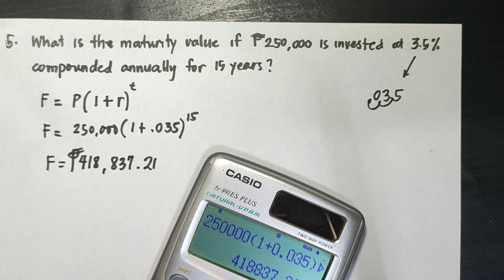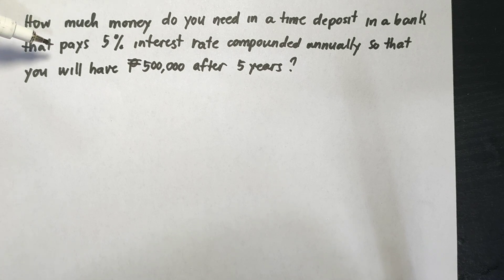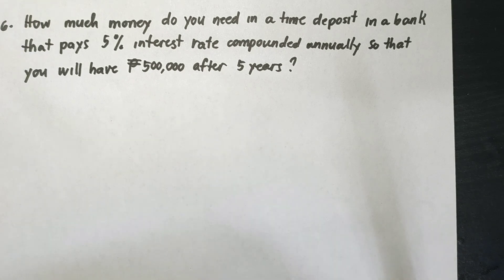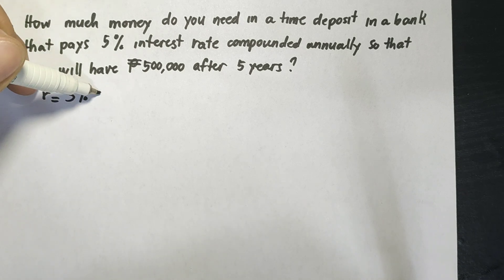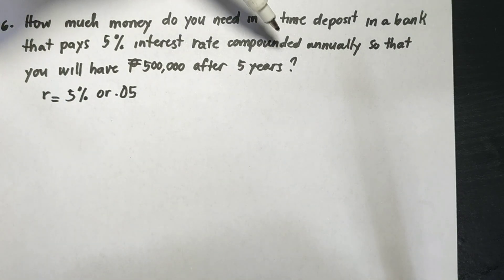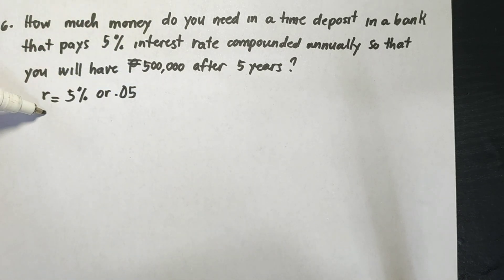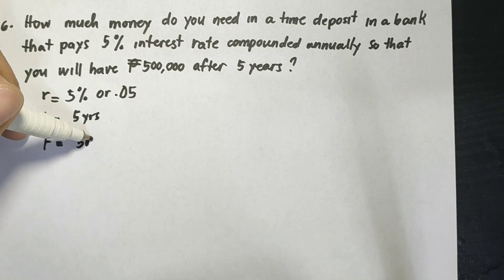Example number 6: how much money do you need to deposit in a bank that pays 5% interest compounded annually so that you will have 500,000 pesos after 5 years? The rate is 5% or 0.05, the time is 5 years, and 500,000 pesos represents the future value. We are looking for the principal value.